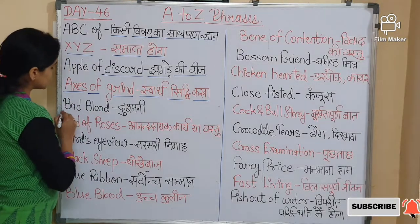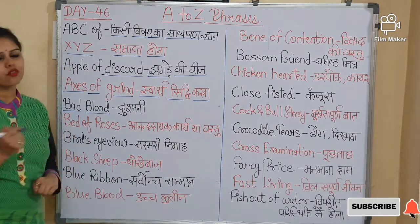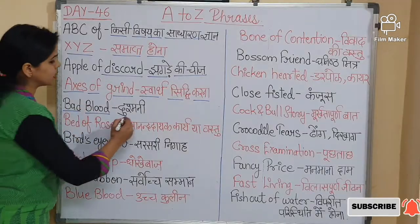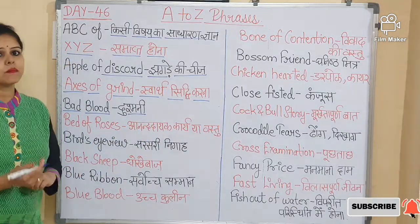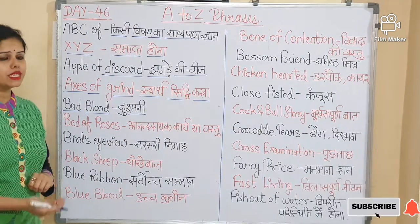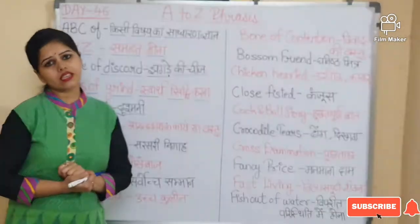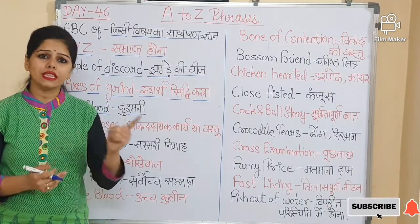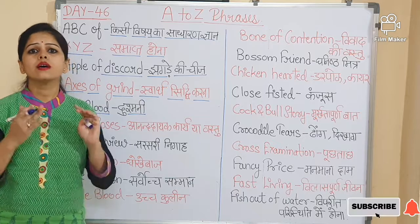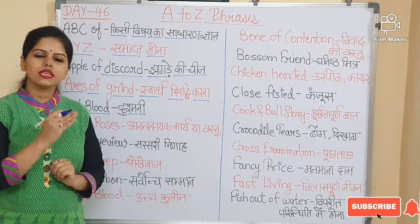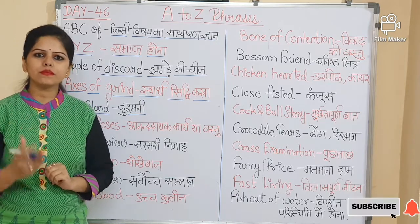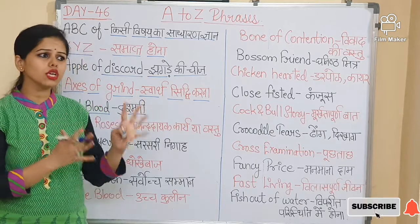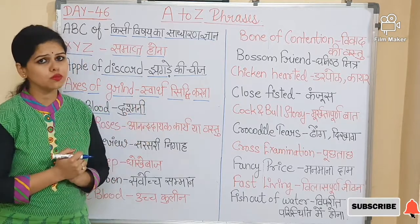Now next is 'Bad blood'. Bad blood means dushmani — enmity or hostility between people. The sentence is: There is bad blood between those two families, meaning un dono ke beech dushmani hai.